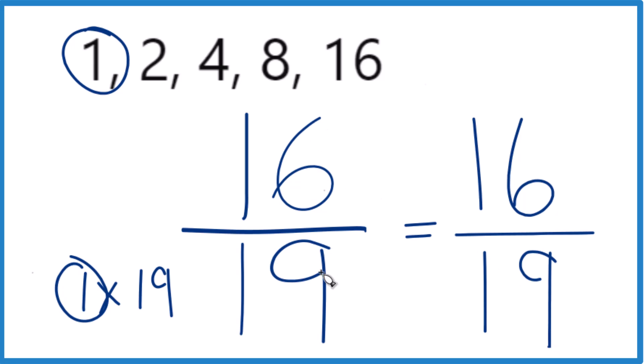So what that means is that 16 19ths, it's already simplified. We can't reduce it any further. It's already in lowest terms.